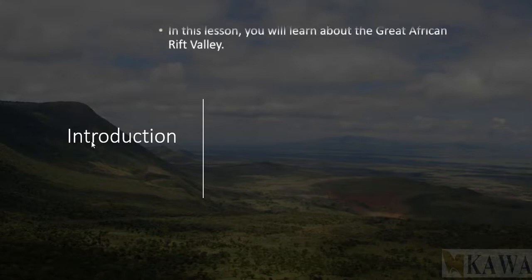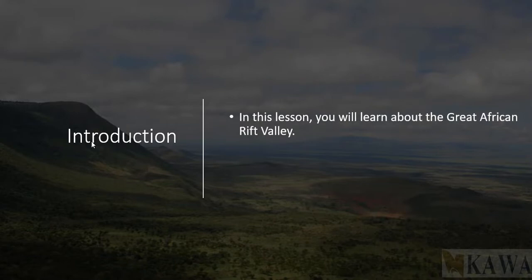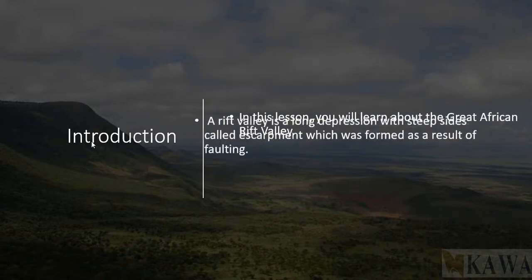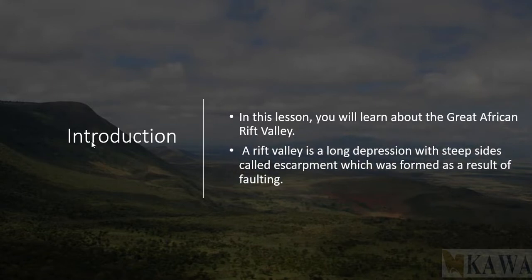In this lesson you learn about the Great Rift Valley. We define a rift valley as an elongated depression with steep sides, which are called escarpments. The rift valley is formed by the process of faulting. The one in Africa stretches all the way from the Red Sea up to Port Beira in Mozambique — it is elongated and as wide as 300 kilometers.